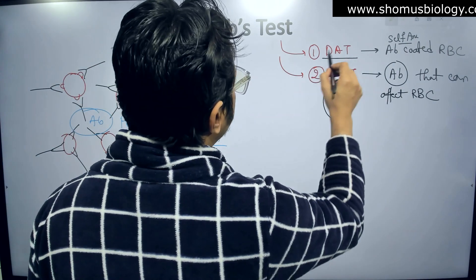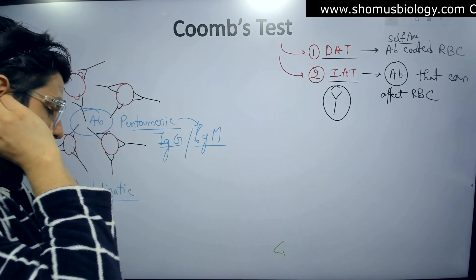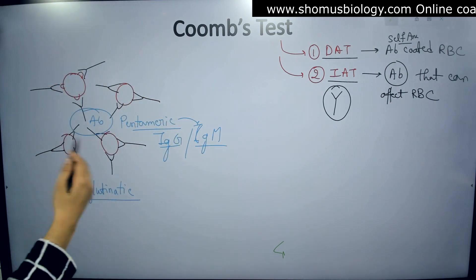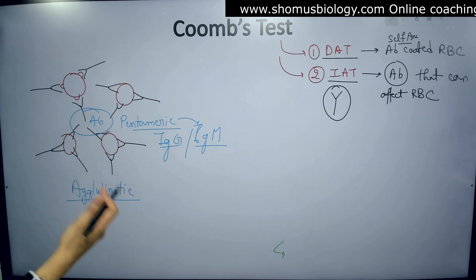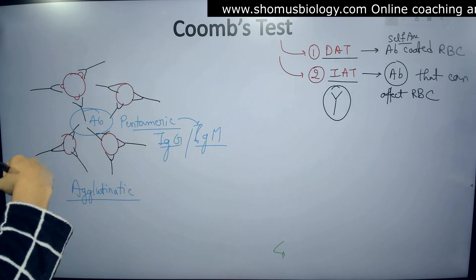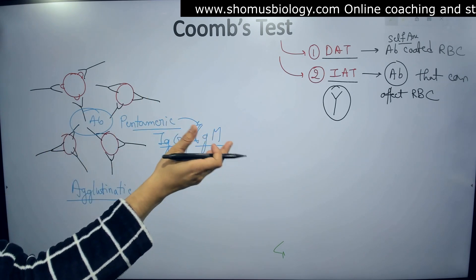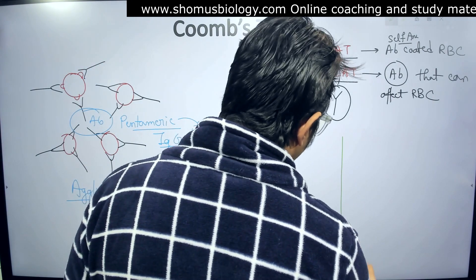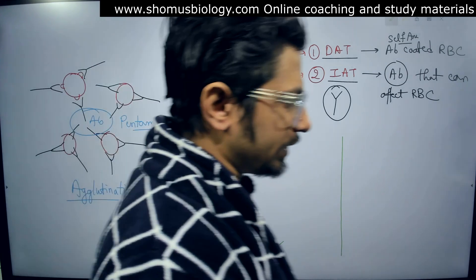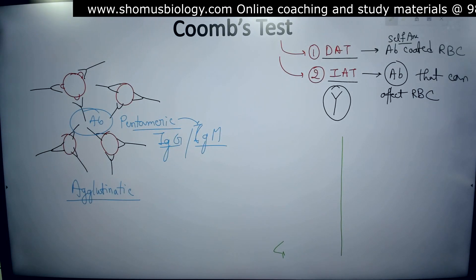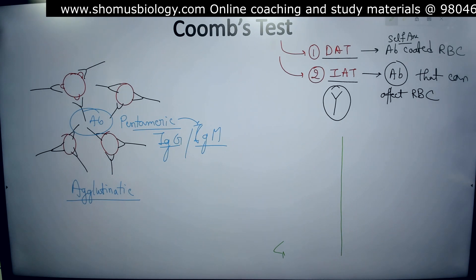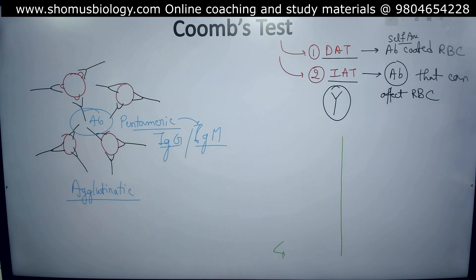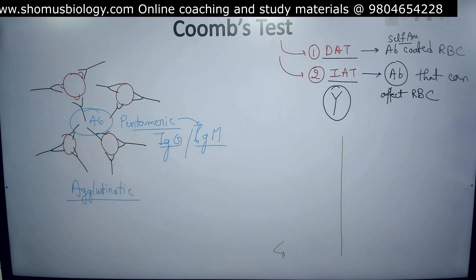Erythroblastosis fetalis is a condition where mothers develop antibodies that go against the RBCs of their children, destroying them. To prevent that, we can test it outside beforehand — before blood transfusion — to know what will happen. For this purpose, we use a simple reagent: the anti-human globulin reagent, also known as AHG.